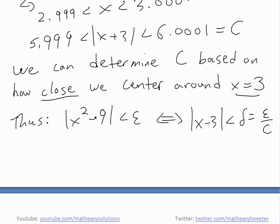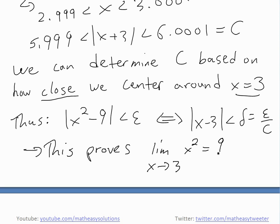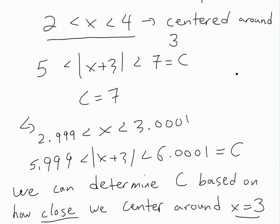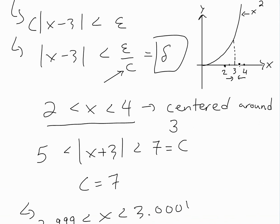So we write it all together: |x² - 9| is less than epsilon whenever |x - 3| is less than delta, which equals epsilon divided by C. We can find C based on how close we are to 3. This basically proves the limit — the limit as x approaches 3 of x² equals 9 — because epsilon can be any number. If we pick it really, really small, then epsilon over C (a known number) is also really small, and we're getting closer and closer.